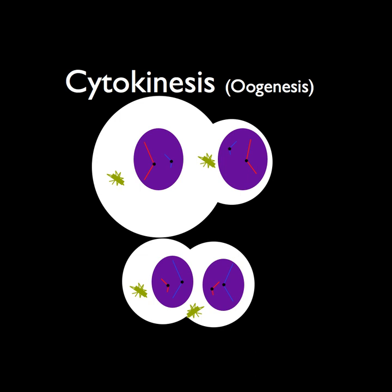In females, on the other hand, a process known as oogenesis is undergone. This is very similar to spermogenesis, but instead of creating four equal sized sperm cells, it creates one large egg cell and three extra incomplete cells that soon die.